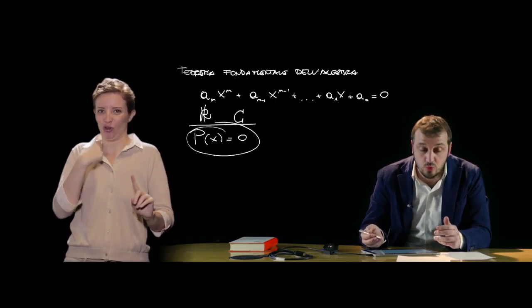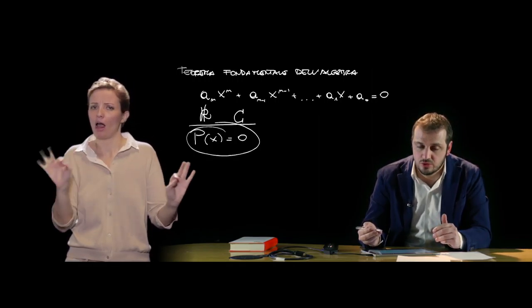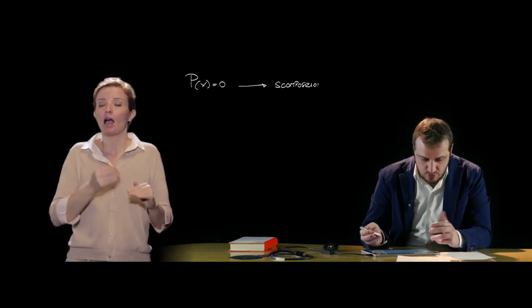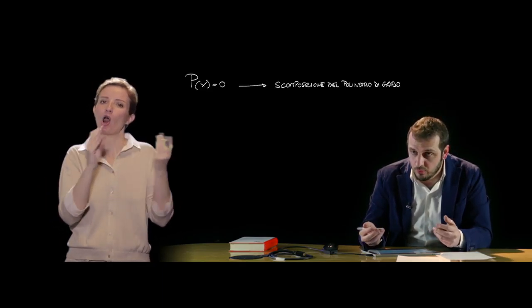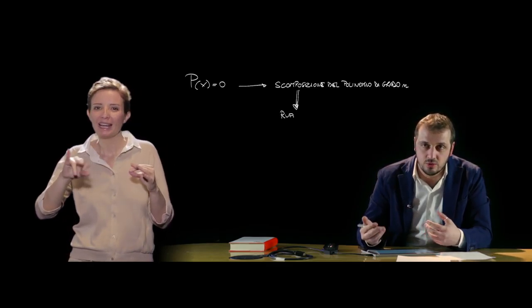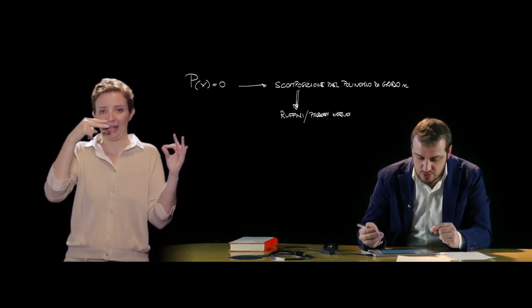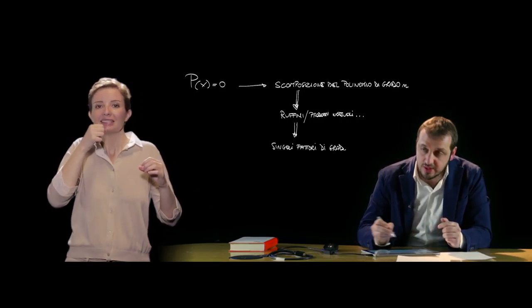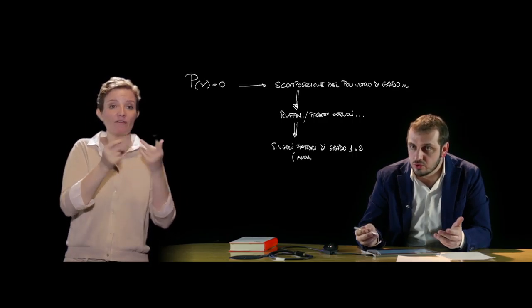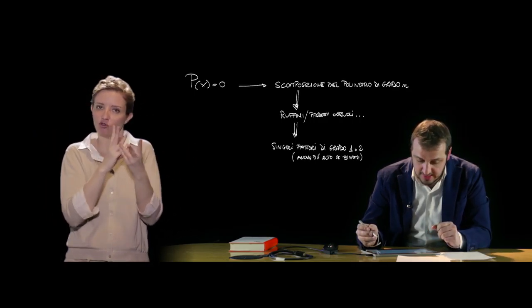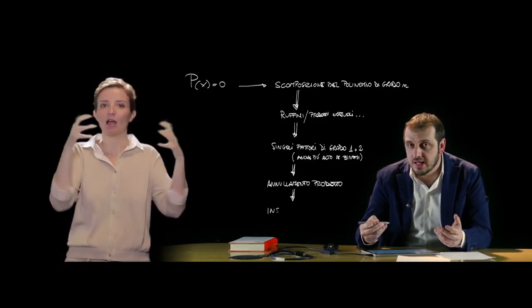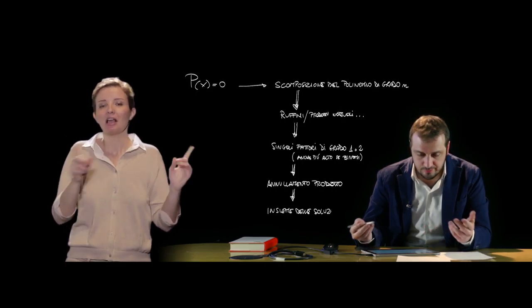Esistono anche alcune particolari equazioni di grado superiore al secondo che vedremo tra poco. Per scomporre il polinomio, oltre alle tecniche già viste, ricordiamo in particolare quella di Ruffini, molto utile quando il polinomio è di grado elevato. Si trovano i valori che annullano il polinomio, si abbassa di volta in volta il grado fino al primo o al secondo, in maniera più gestibile.